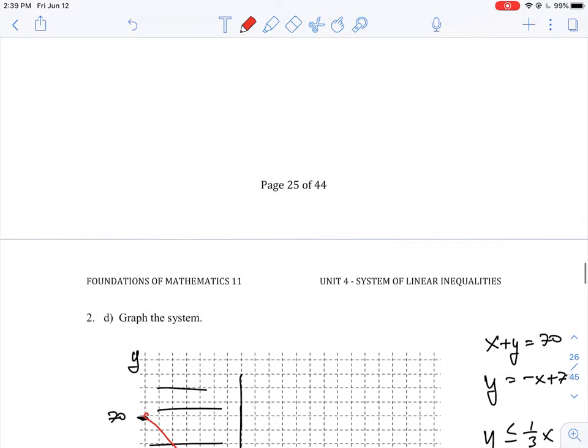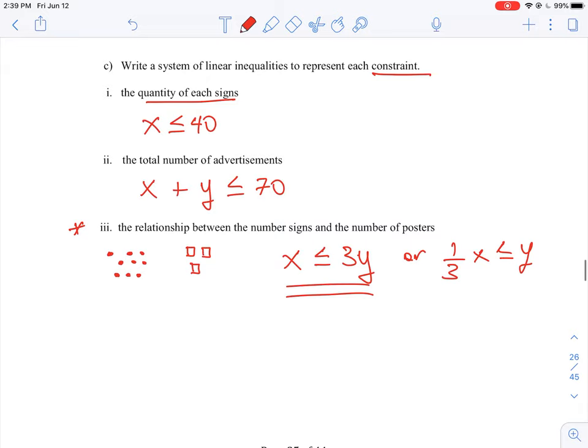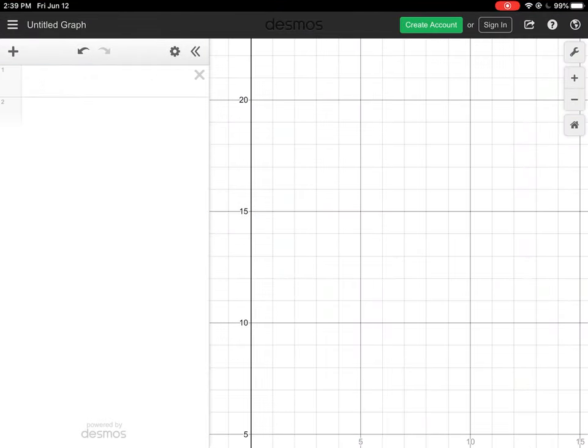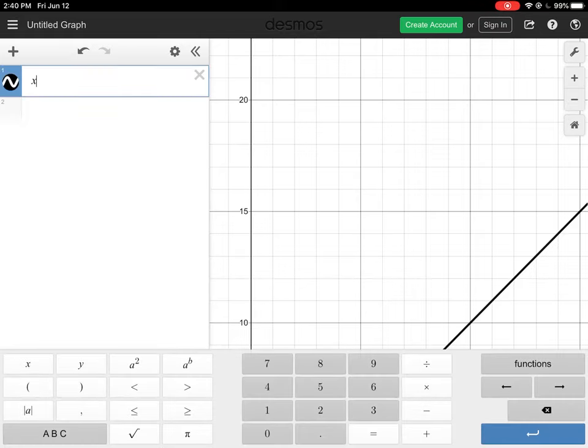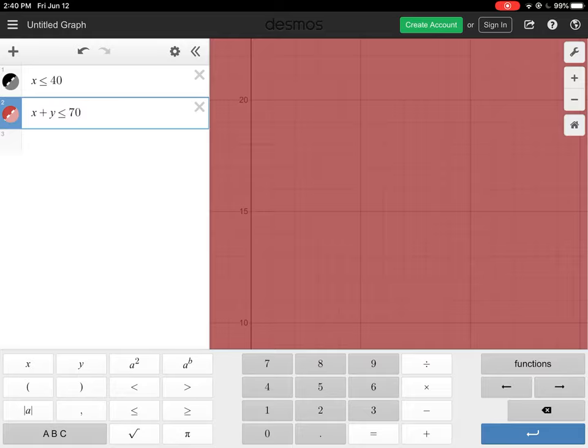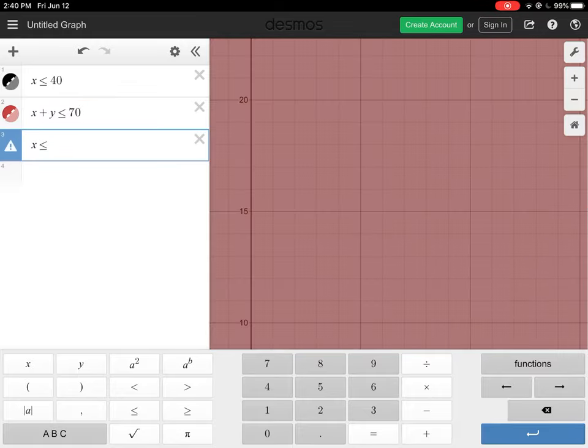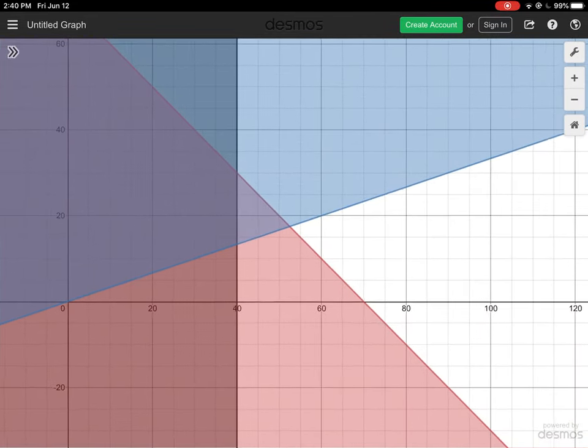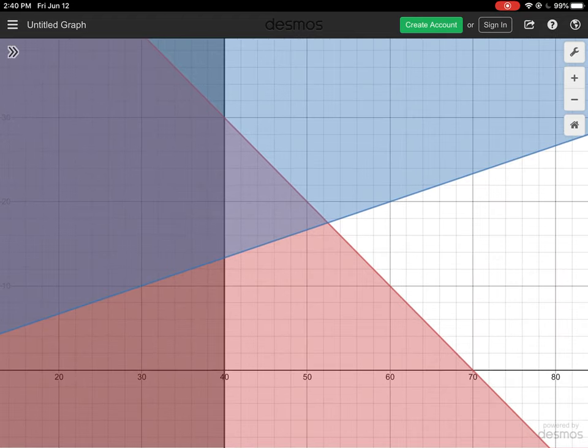So then the next question here is we want to graph the system. I would again take these values and I would plot these using a computer tool just because it is easier for you to work with when you are starting out with these. So let's just go back to our Desmos tool here. I'm going to erase the previous equations and we are going to put in our constraints here. So I have x is less than 40, and then that's one of our constraints, then we have x plus y is less than or equal to 70, and then we have x is less than or equal to 3y.